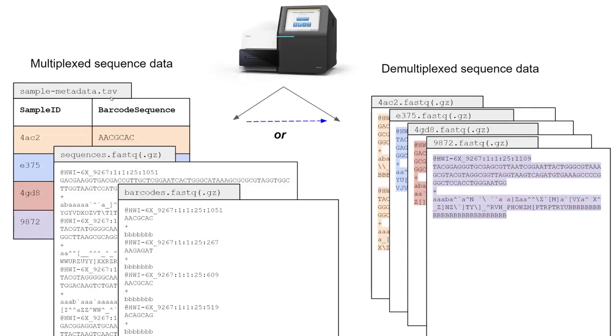Now, depending on the sequencing facility where your data came from, you may receive your data in either multiplexed form, such as in our example here, or demultiplexed. So, if you receive multiplexed data, then of course you will need to demultiplex your reads.